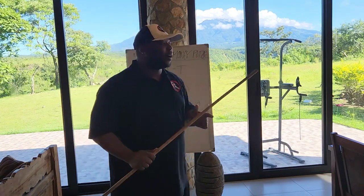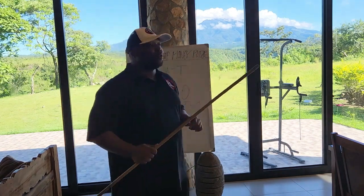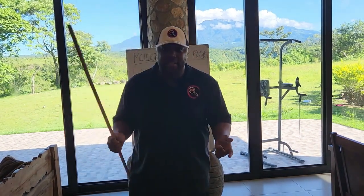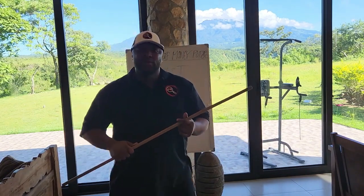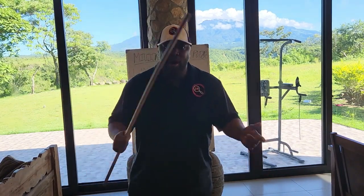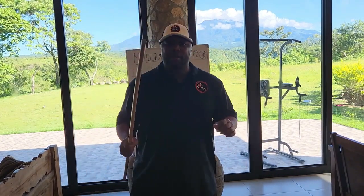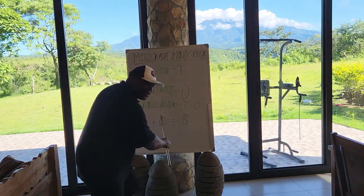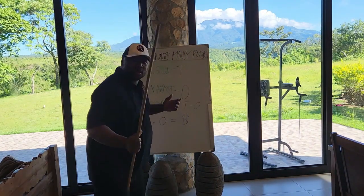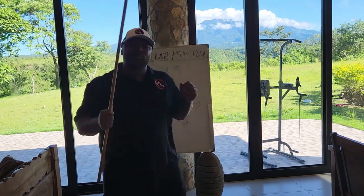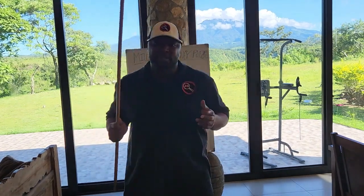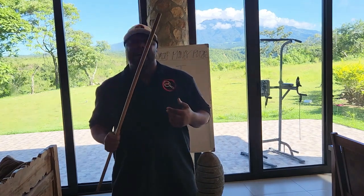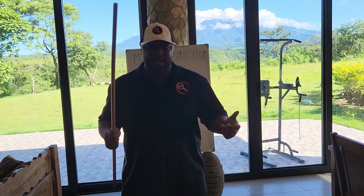If you know Myron Golden, you'll hear that he has something called the Make More Offers Challenge. He's not a hypocrite — he literally made more offers, and he did that by harnessing traffic. Who did he learn one of those techniques from? This guy at the bottom, Russell Brunson. Russell Brunson, in his Traffic Secrets book, has something called Creating the Dream 100 List.